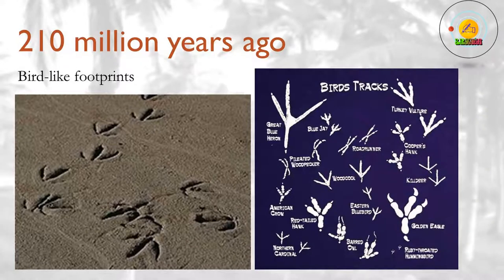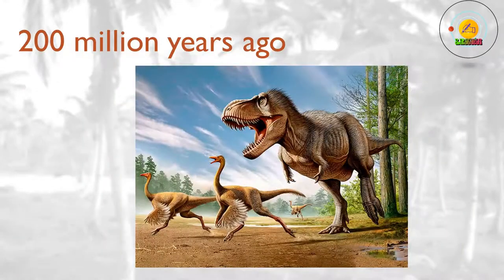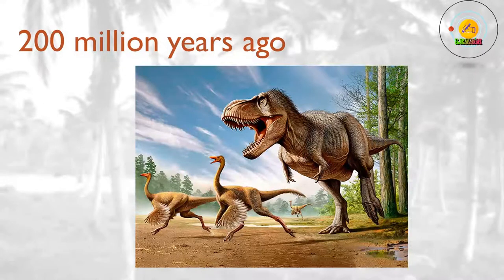210 million years ago. Bird-like footprints and a badly preserved fossil called Protoavis suggest that some early dinosaurs are already evolving into birds at this time, though this claim remains controversial. 200 million years ago. As the Triassic period comes to an end, another mass extinction strikes, paving the way for the dinosaurs to take over from their sauropsid cousins. Around the same time, proto-mammals evolve warm-bloodedness — the ability to maintain their internal temperature regardless of the external conditions.